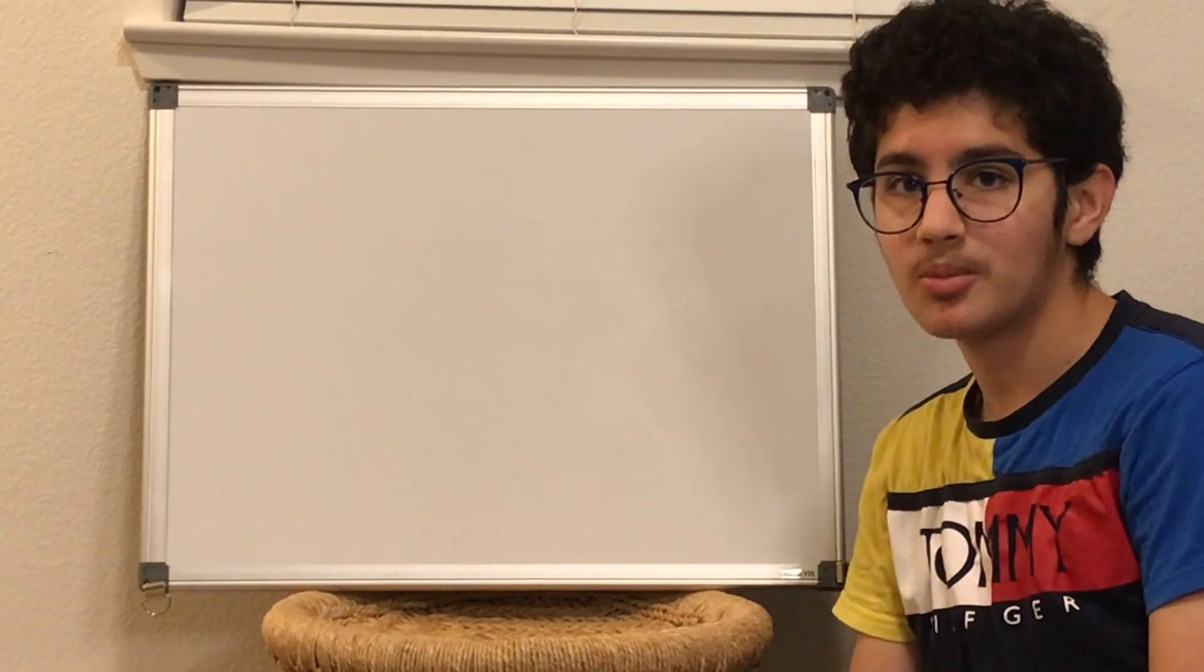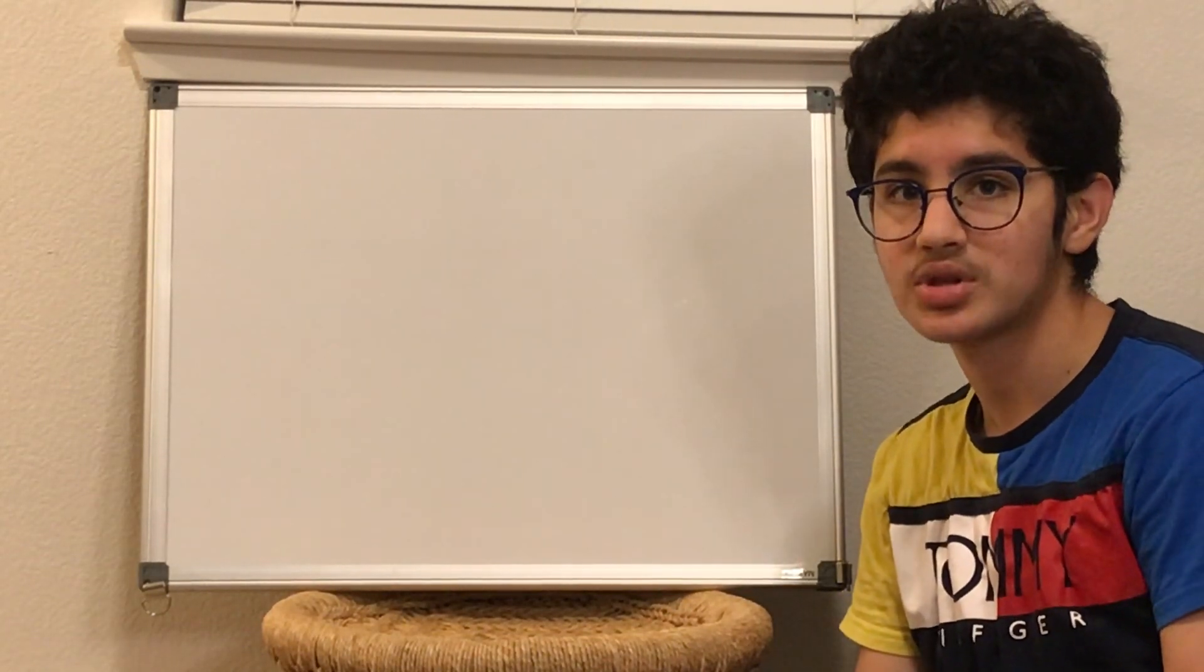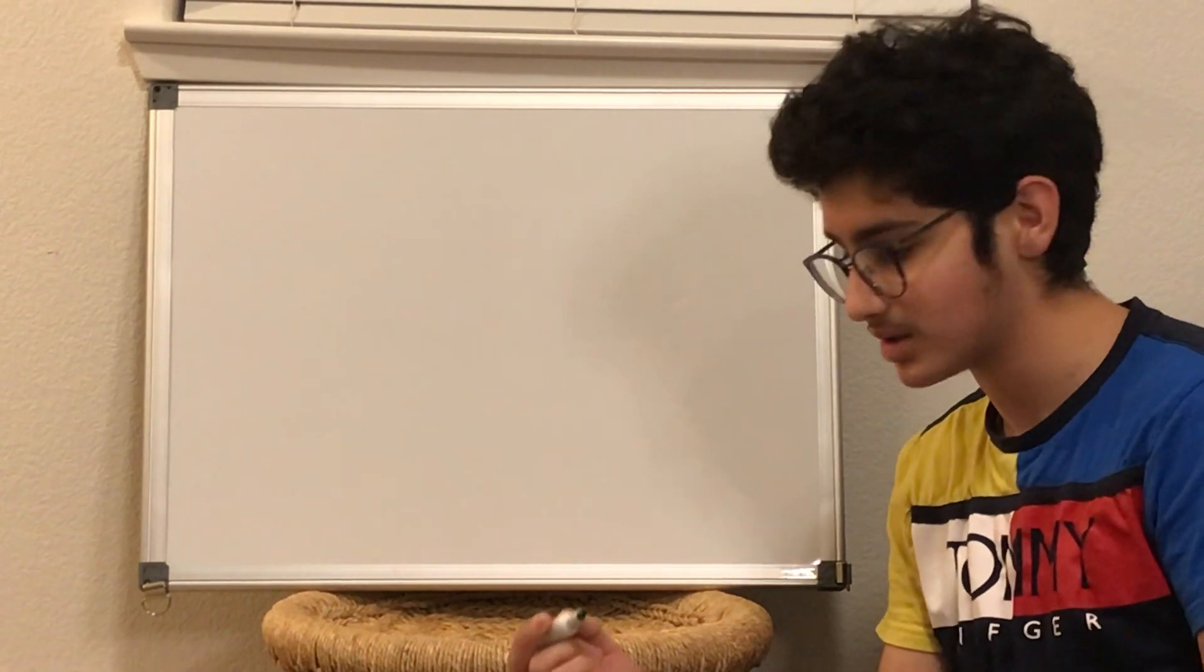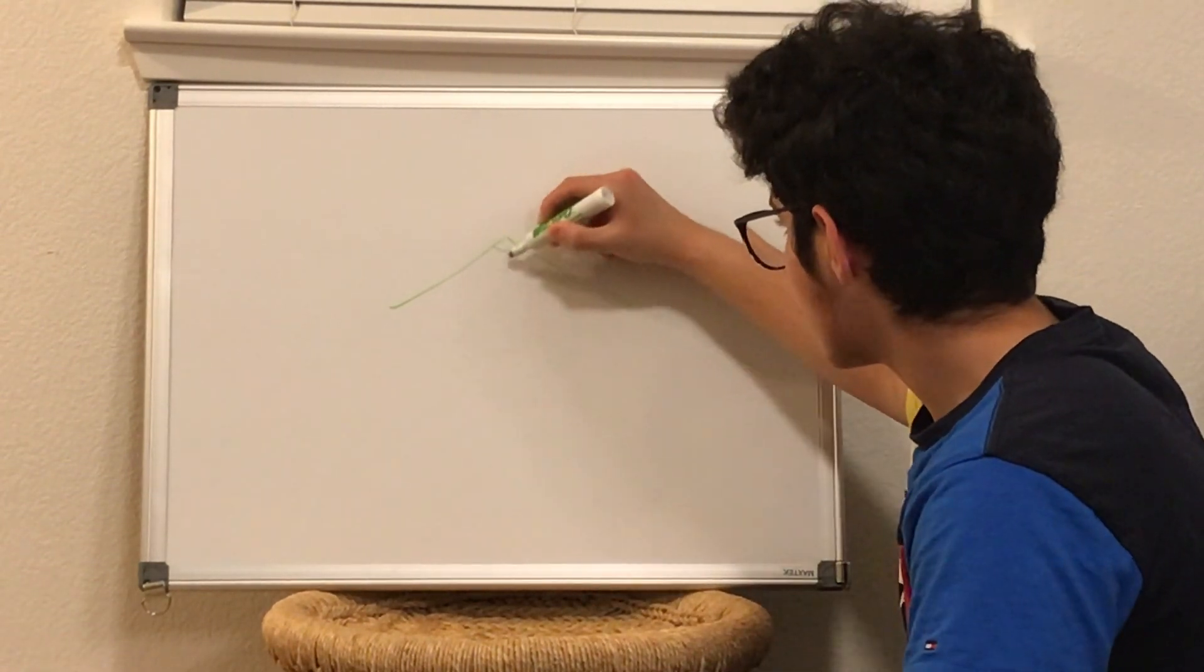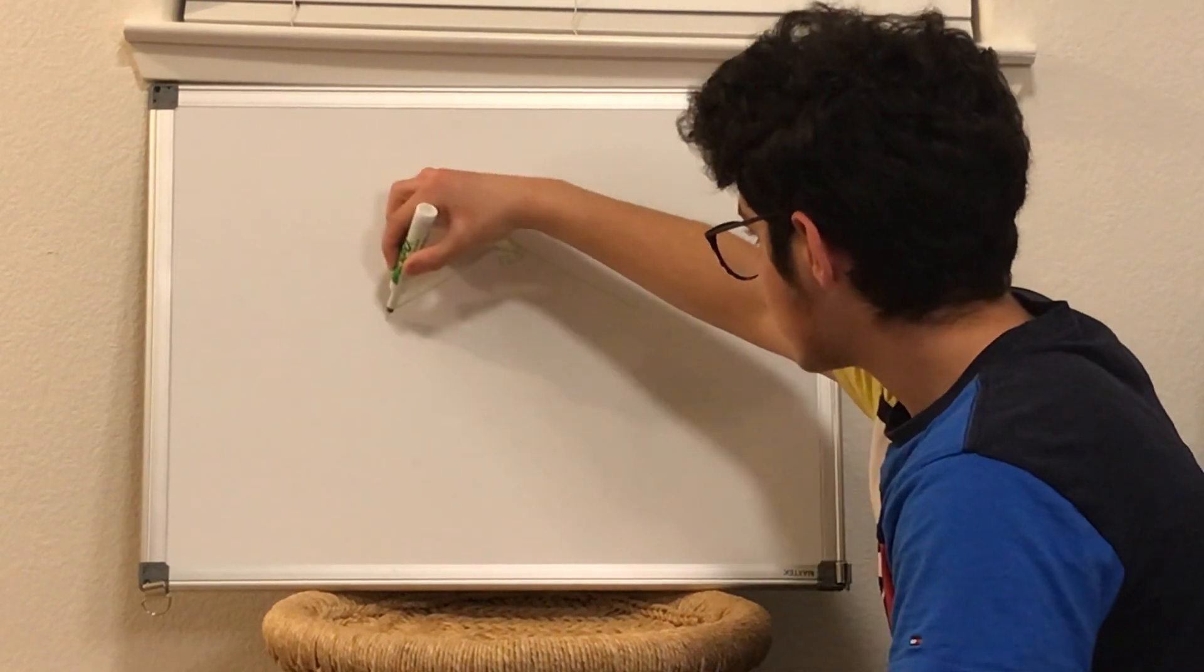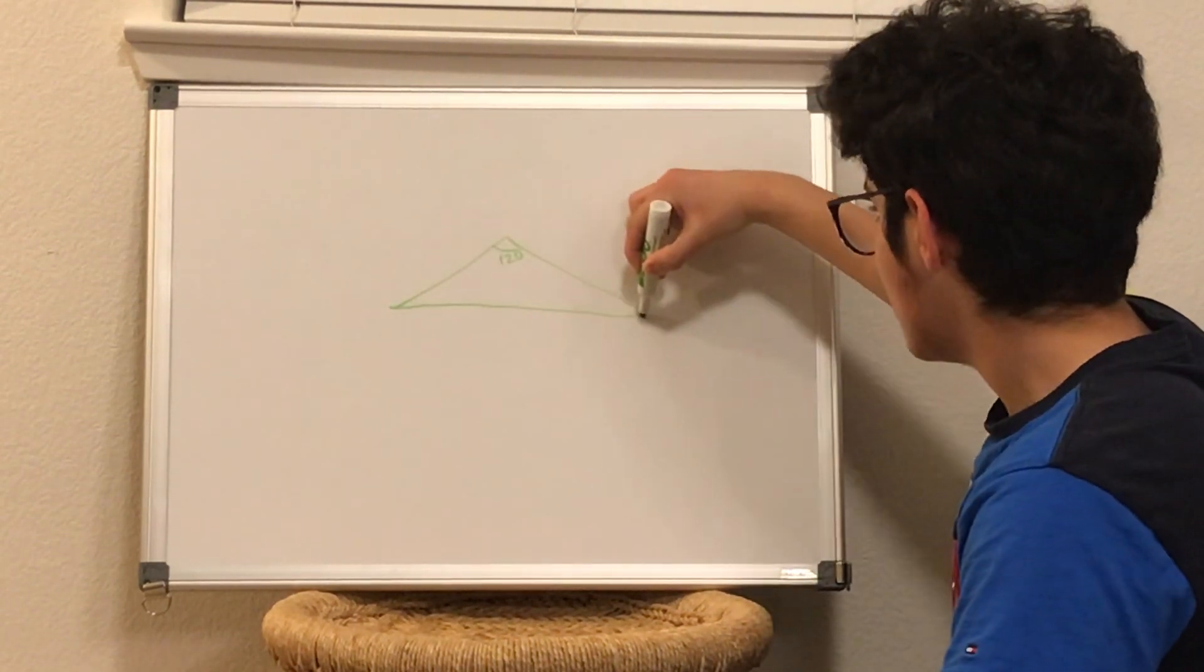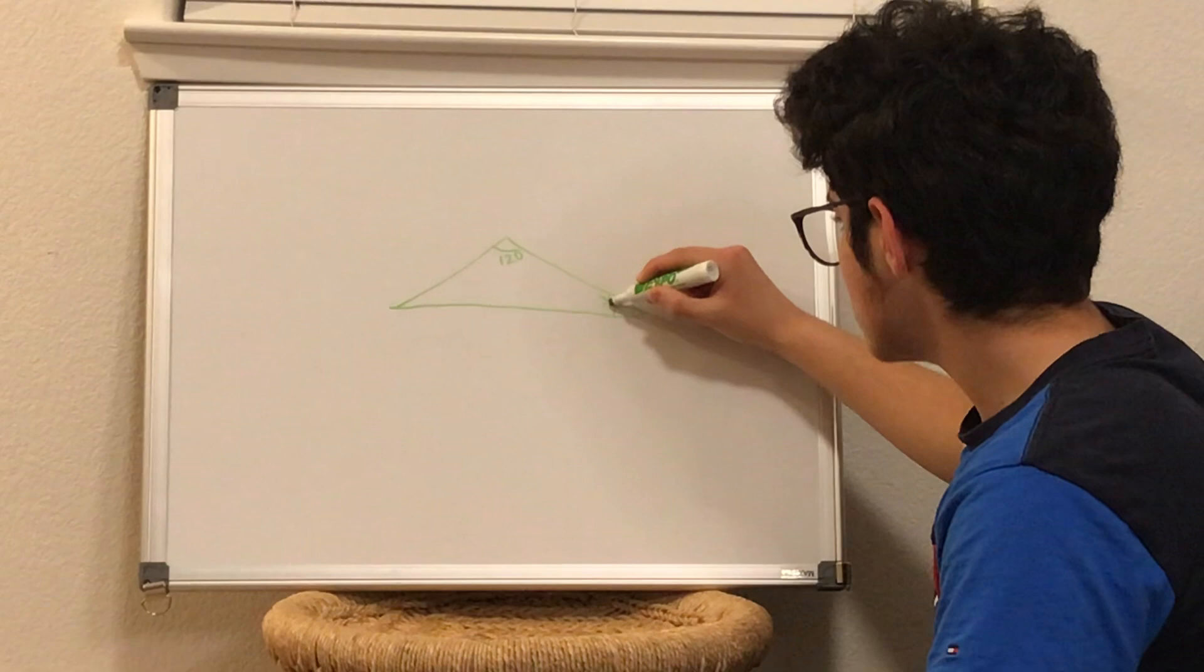Hi everyone, in this video I'm going to show you how to find the area of a 30-30-120 degree triangle. So let's say that this is a triangle and this is a 120 degree angle and then each of these is 30 degrees.